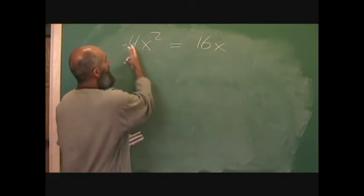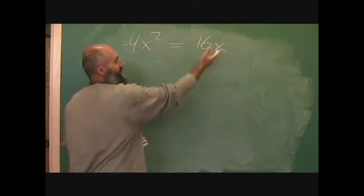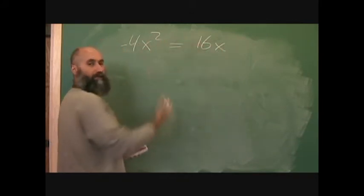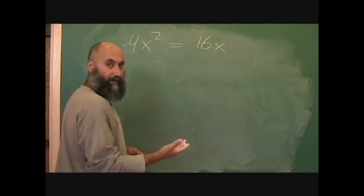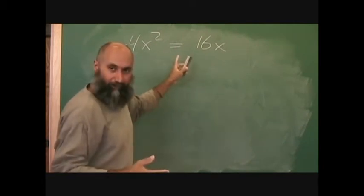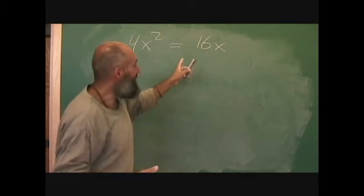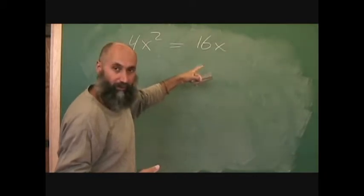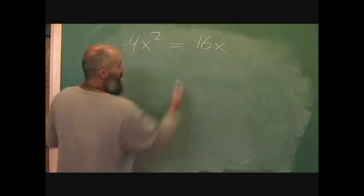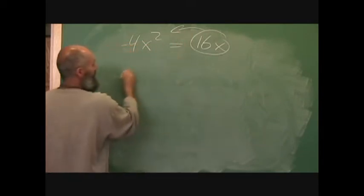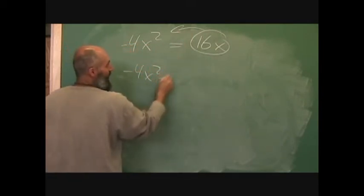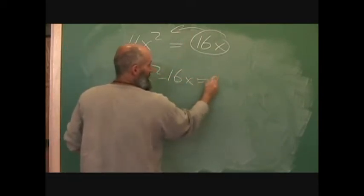So right now we've got -4x² - 16x. What we want to do is bring the 16x over to this side. Now, we'll discuss another way we can do this, but what happens if you do it the other way, you're going to lose the solution. So what happens is you grab this guy, bring it over, so that's -4x² - 16x = 0.